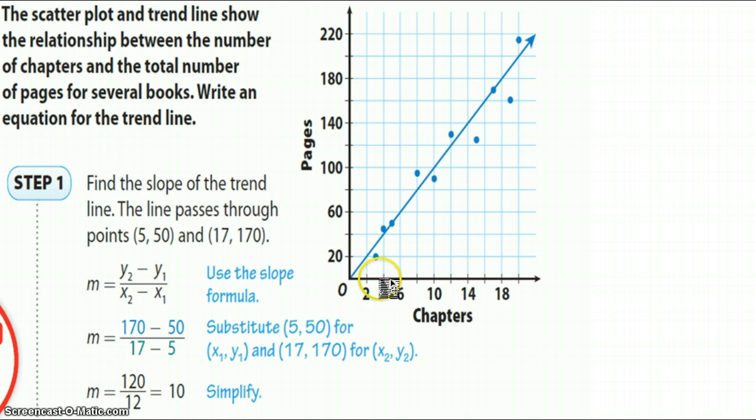So what the author did is he looked at 5, let's look at the intervals, 2, 4, 6. So this would be x is 5, and then here we have 20, 40, and this is halfway between 40 and 60. So let's call it 50. So he used the points 5, 50 as his first point.